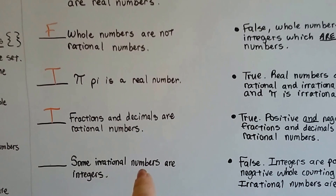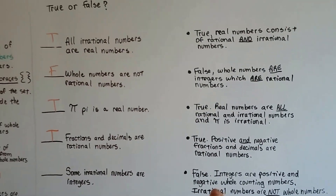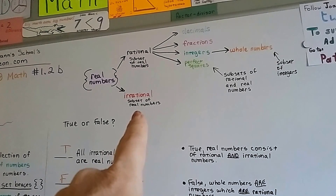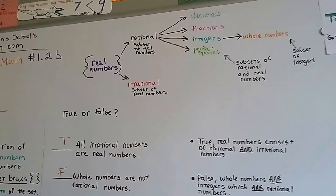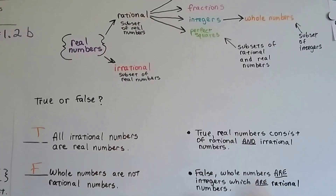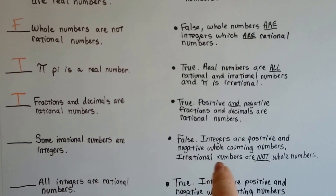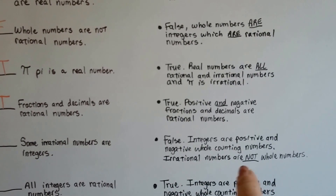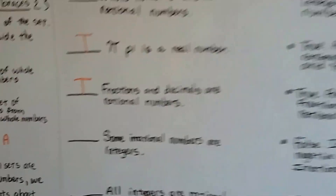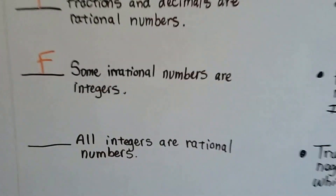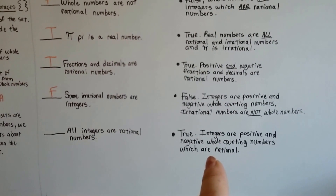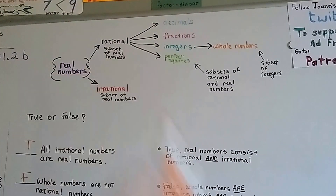Some irrational numbers are integers — that's false. Integers are not even in the same branch as irrational numbers. Irrational numbers are a subset of real numbers, but integers are rational. An integer is a positive or negative whole counting number, and irrational numbers — like the square root of 2, square root of 3, or square root of 17 — are not whole numbers. So that's false. All integers are rational numbers — that's true. Integers are positive and negative whole counting numbers, and those are rational.